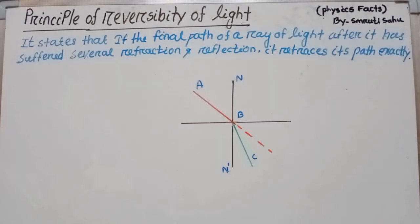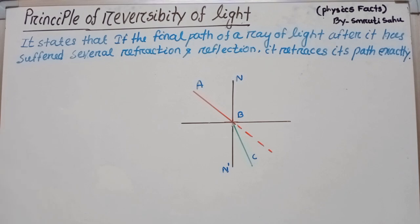Here we discuss the principle of reversibility of light. It states that if the final path of a ray has suffered several refractions and reflections, it retraces its own path exactly. So this is the definition; we go into the topic in detail.